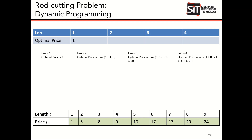This gives me a value of five. So the best way to deal with a rod of size two is not to cut it, leaving it as is and giving me a price of five.